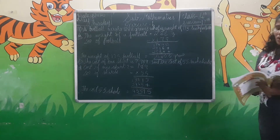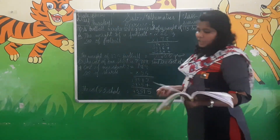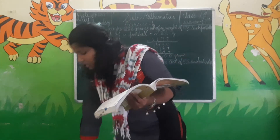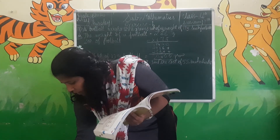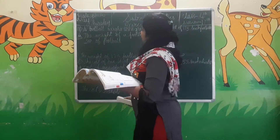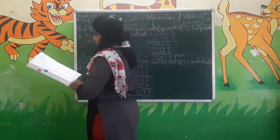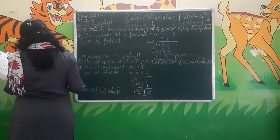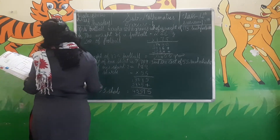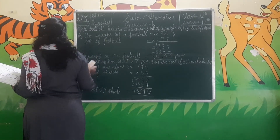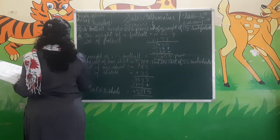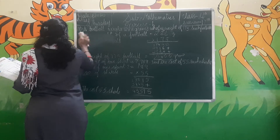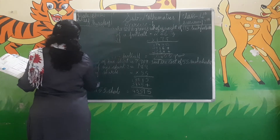Now we go for the next chapter: division. In the previous year, in the first standard, we have learnt about division. But in that, they gave 2-digit numbers to divide. But in this, they have given 3-digit numbers. In the exercise, I will show you how to do step-by-step division.